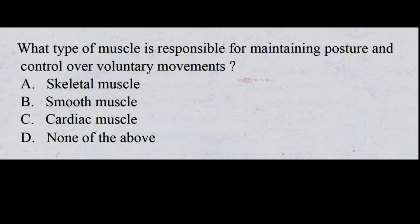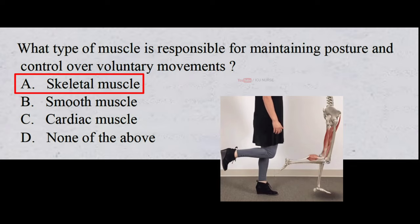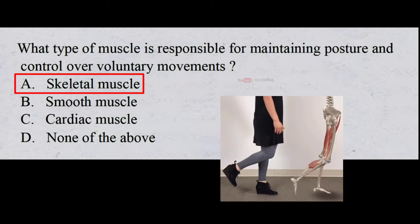What type of muscle is responsible for maintaining posture and control over voluntary movements? A. Skeletal muscle. B. Smooth muscle. C. Cardiac muscle. D. None of the above. And the correct answer is A. Skeletal muscle. Voluntary movements are movements of the body over which a person has control; skeletal muscles are responsible for maintaining posture and control over voluntary movements.